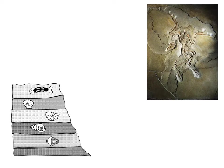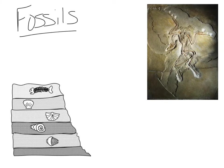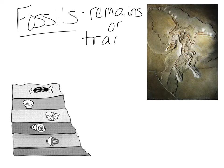Let's look at some pieces of evidence of evolution — things that support the theory. The first piece of evidence would be fossils, which is one of the first things most people think of when they think of evolution. A fossil consists of remains or traces of an organism. Remains would be actual pieces of the organism — a piece of skin, or the actual bones.